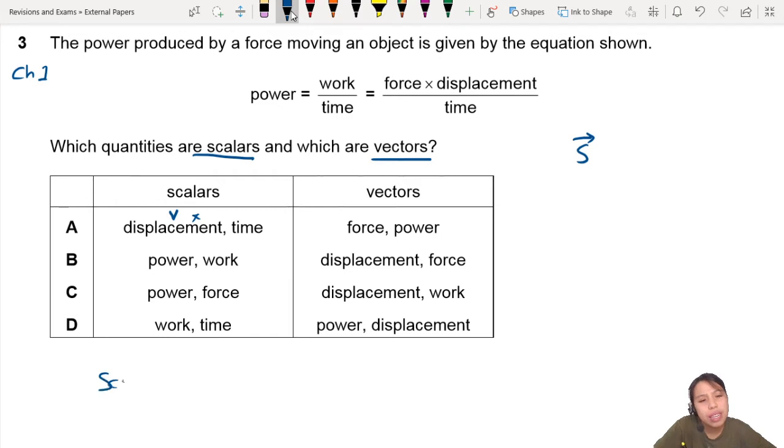Scalars, what does it mean? Scalars has only magnitude, a number. But vectors has direction. Displacement to the left at 21 degrees, displacement to the right, all different things. So time is a scalar, that's fine.